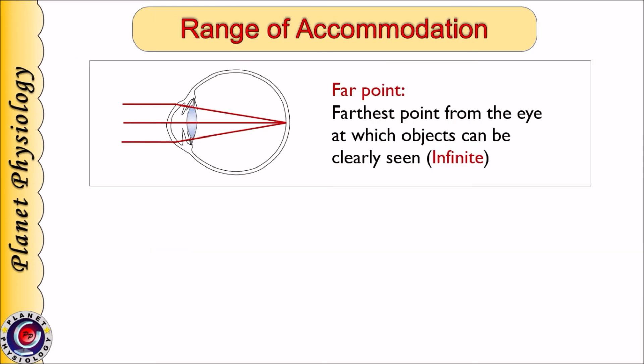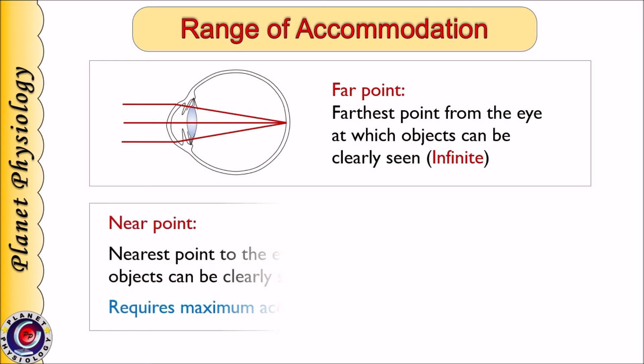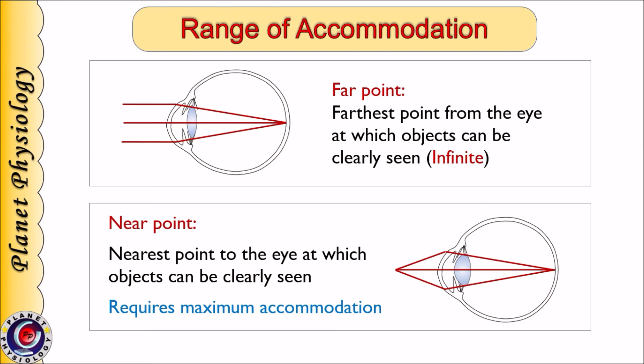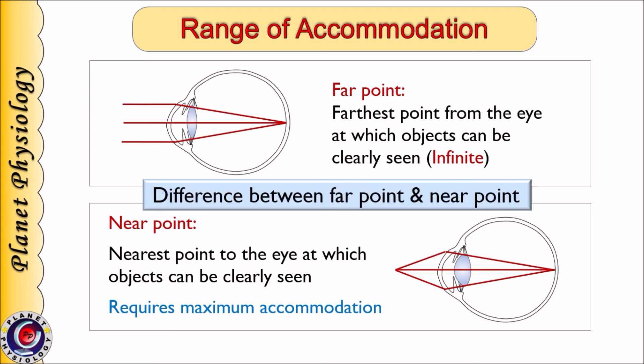A normal eye can clearly visualize all objects beyond 6 meters distance, and hence the far point — the farthest point from the eye at which objects can be clearly seen — is infinite. In contrast, the lens has a definite near point due to its limited capacity to increase refractive power. The nearest point to the eye at which objects can be clearly seen is called the near point, and it requires maximum accommodation. The difference between far point and near point is called the range of accommodation.